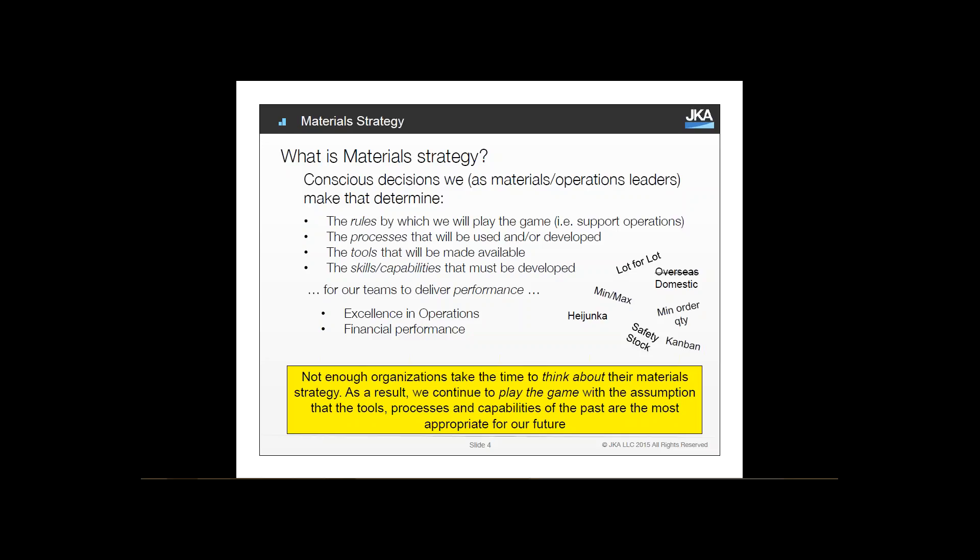A big challenge for most organizations is that they don't take time to think about the material strategy. As a result, we continue to play the game with the assumption that tools, processes, and capabilities that were successful in the past are appropriate for the future. Many of you have been involved in lean transformations. The processes and capabilities that worked before are often not the same ones needed when converting to a flow, and there's often a big disconnect.